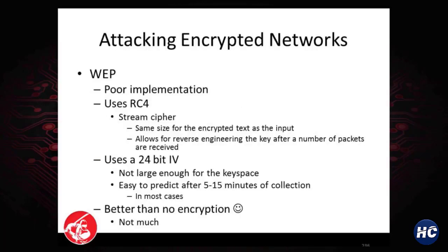WEP is a perfect example of why radio engineers should not be selecting cryptographic algorithms. They selected a cipher called RC4 — RC4 is a stream cipher, and a stream cipher has the same plaintext size as the ciphertext. Because of that, we can reverse engineer the key after a number of packets are received. The radio engineers knew this, so they added a protection value called the IV — the Initialization Vector — but at 24 bits, it's not large enough for the key space. A modern computer can exhaust it, and in about five to fifteen minutes of collection, we can crack the WEP key because we get enough weak IVs. It's better than null encryption, but not by much.